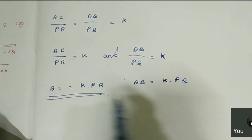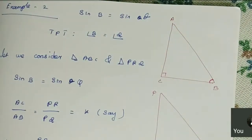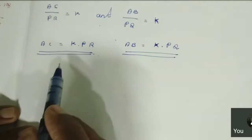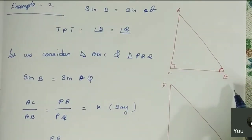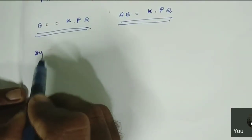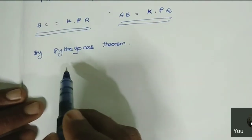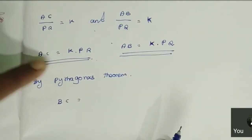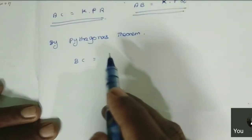Now we have found AC and AB. We need to find BC. AB is the hypotenuse, AC is one leg, and CB is the other leg. By the Pythagorean theorem, hypotenuse squared equals leg squared plus leg squared. So AB squared equals AC squared plus CB squared.